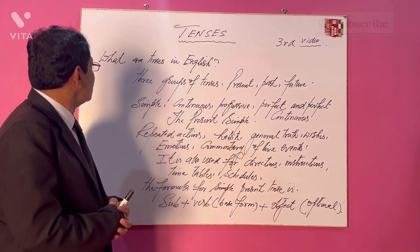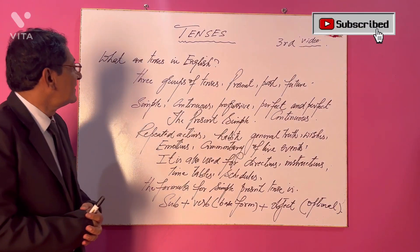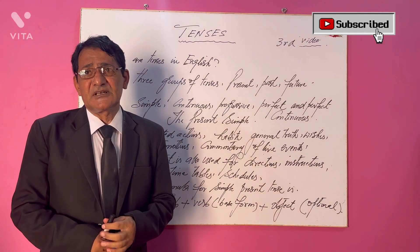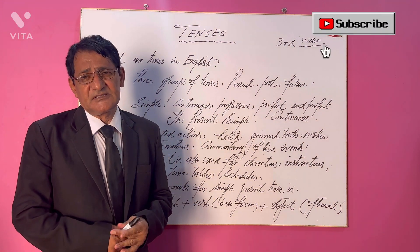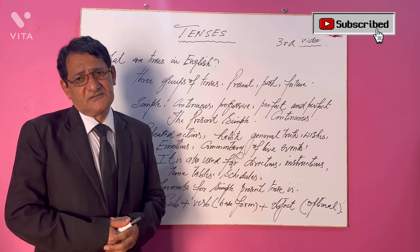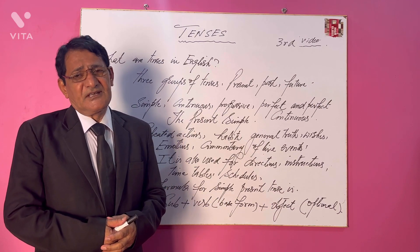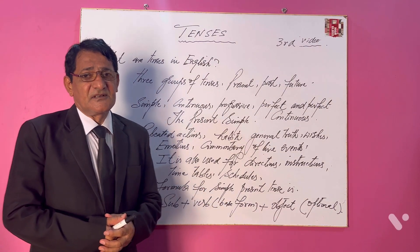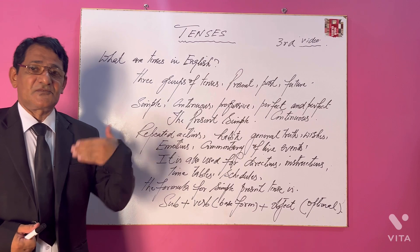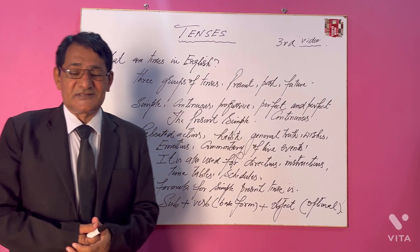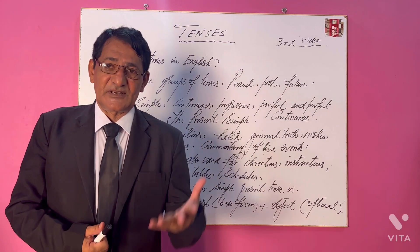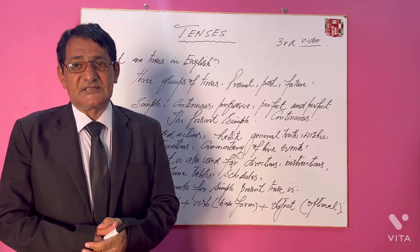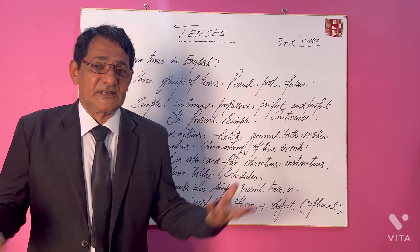What are the different tenses in English language? The number of tenses varies in certain cases depending on writers' opinions. There are 14 tenses according to some, but 12 are the more important tenses in English language that we need to learn.